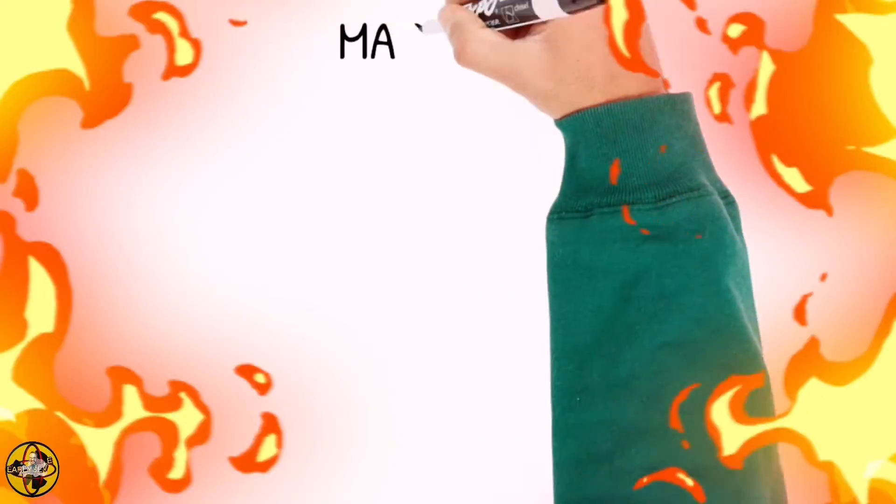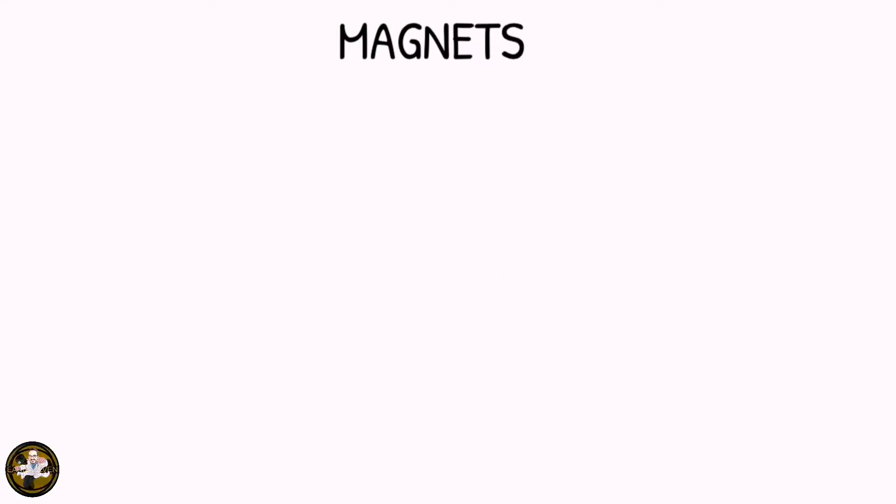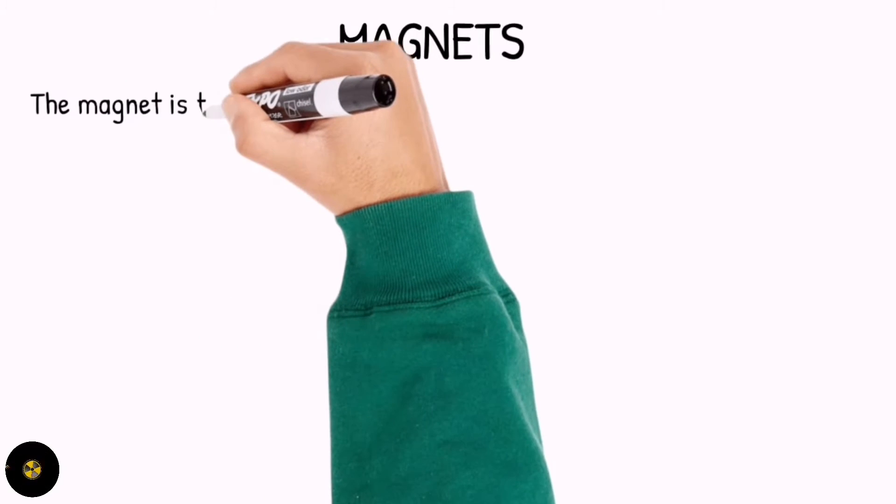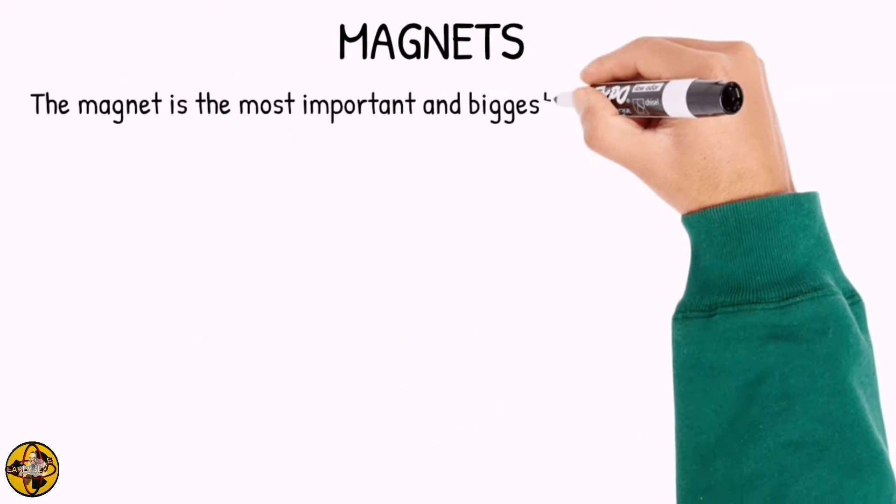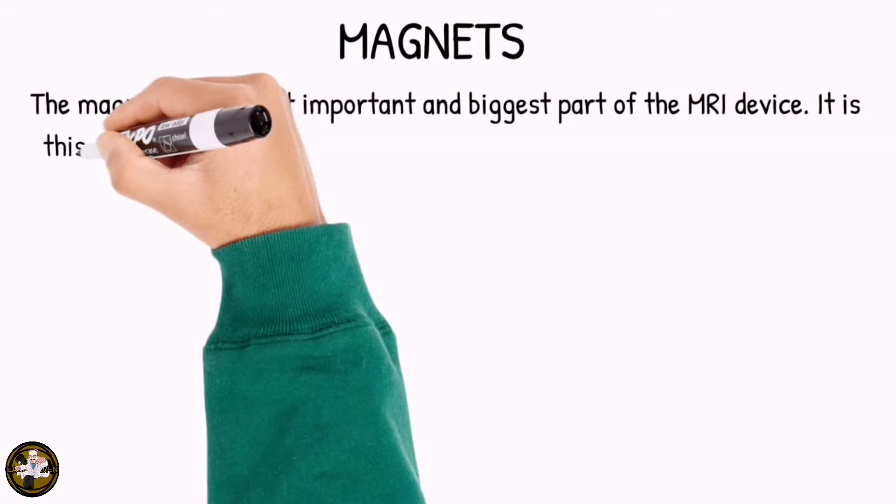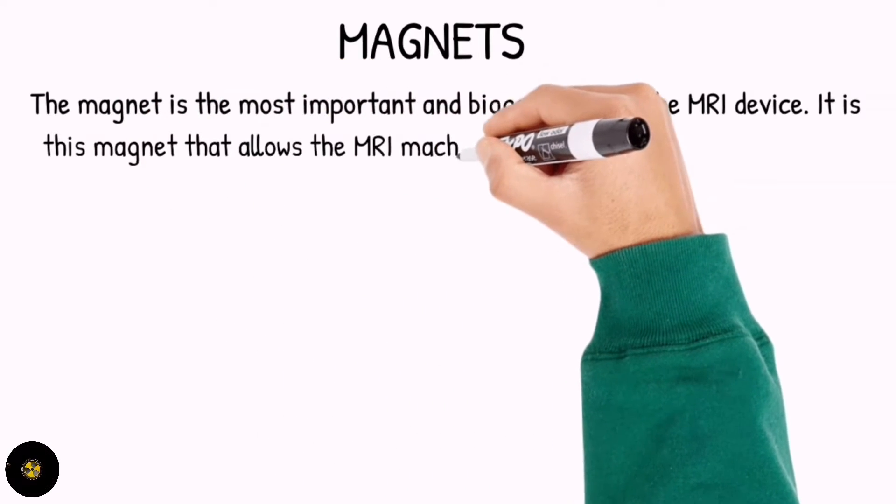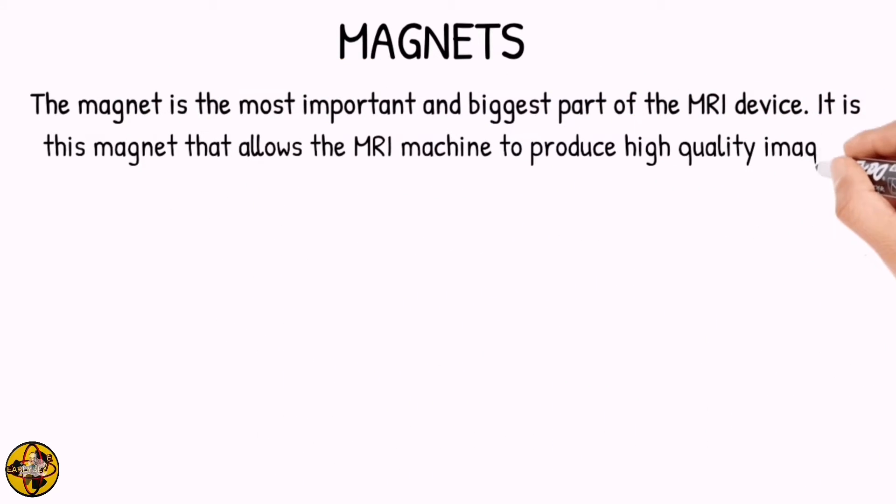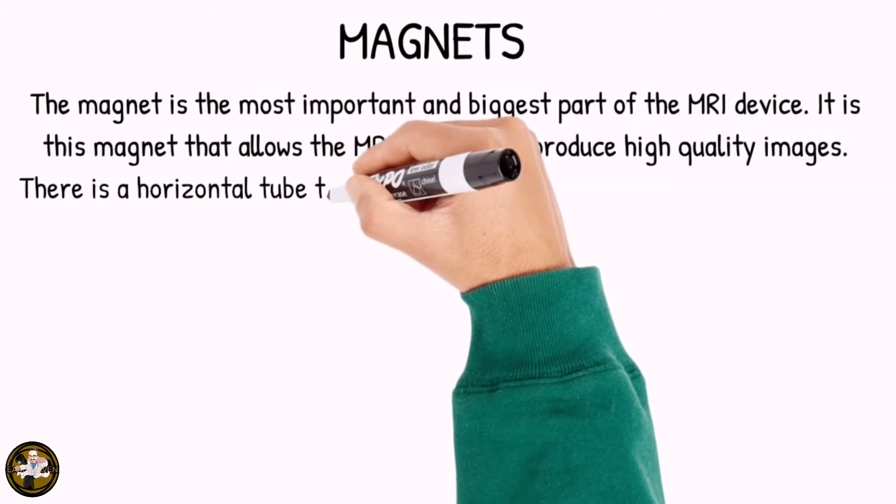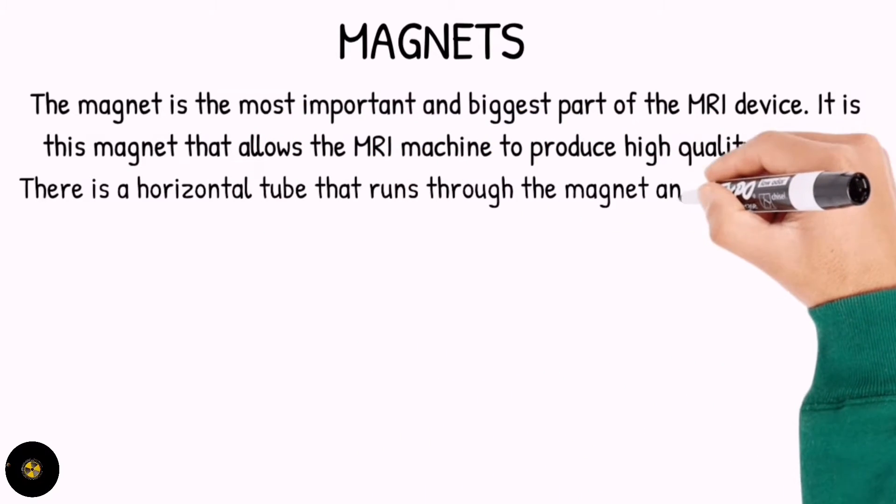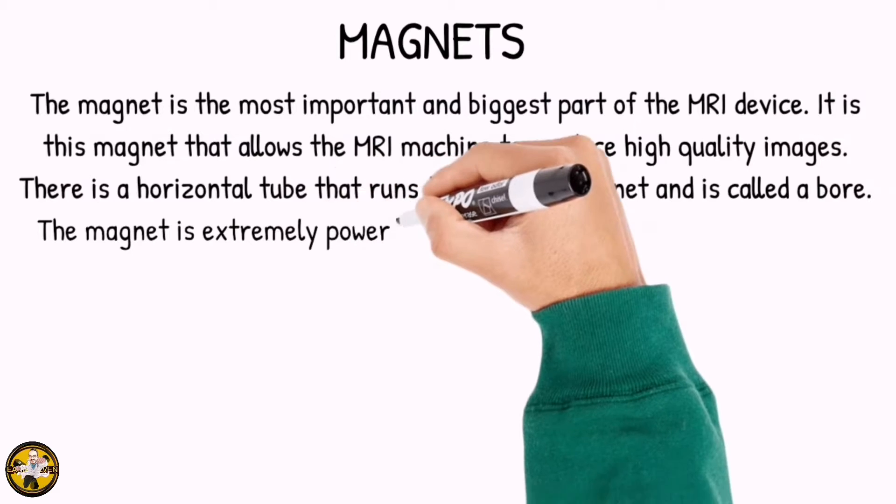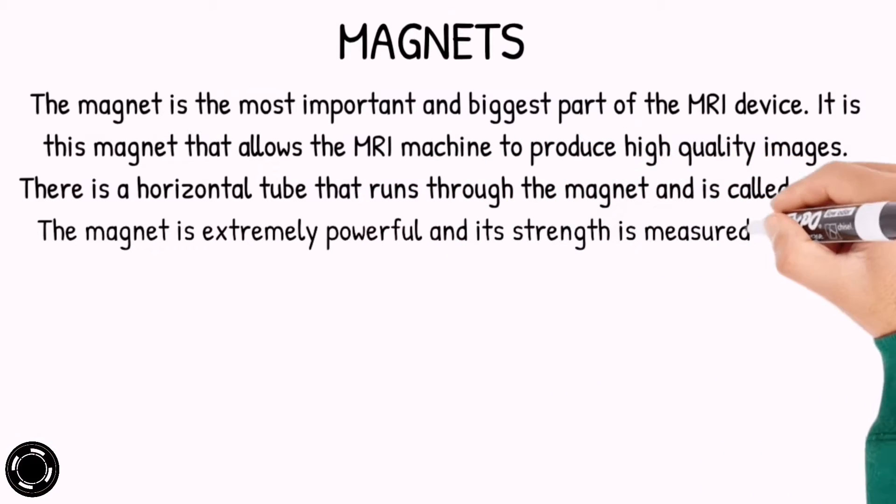The first component is the magnet. The magnet is the most important and biggest part of the MRI device. It is the magnet that allows the MRI machine to produce high-quality images. There is a horizontal tube that runs through the magnet and is called a bore.